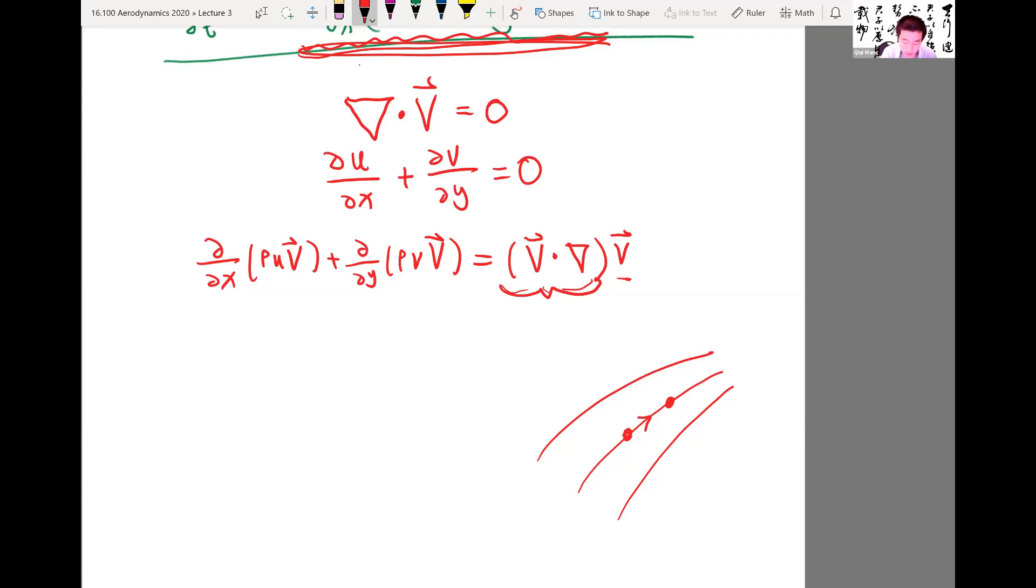And in this case, sorry, we have to multiply ρ on top of everything. Yeah, so in this case, what we are looking at is the rate of change of velocity itself along a streamline. So let's see why that is the case.